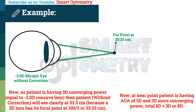At the near point, the patient has an amplitude of accommodation of 5 diopters plus 3 diopters of extra converging power from the myopia, giving a total of 8 diopters. So the patient will be able to see clearly at 12.5 cm, because an 8 diopter lens has its focal point at 100 divided by 8, or 12.5 cm. So the patient's near point is at 12.5 cm.